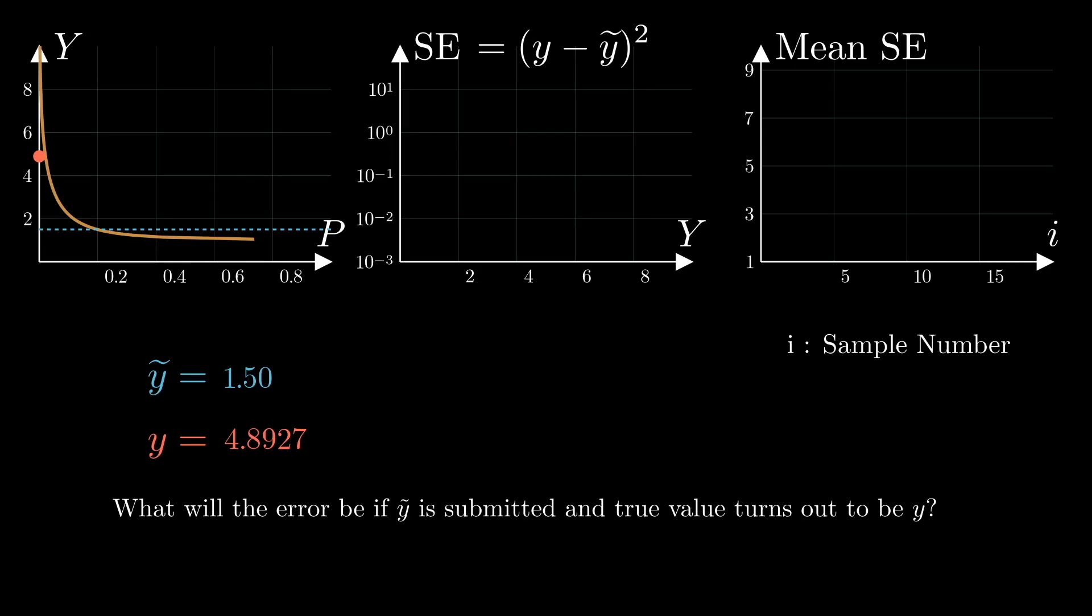We have our first sample. Calculate the error for it. So far, there is only one sample, so the average error in the right plot is the same as the error we just calculated. Sample the next point, calculate its error, and update the average. Keep sampling more points until the average error does not change with more samples.